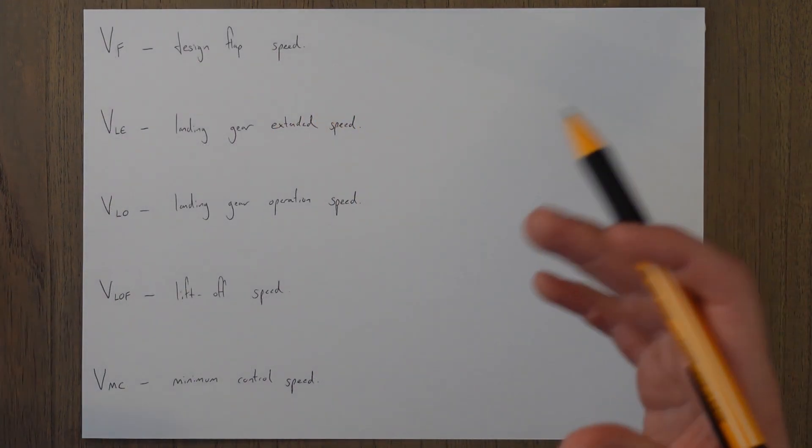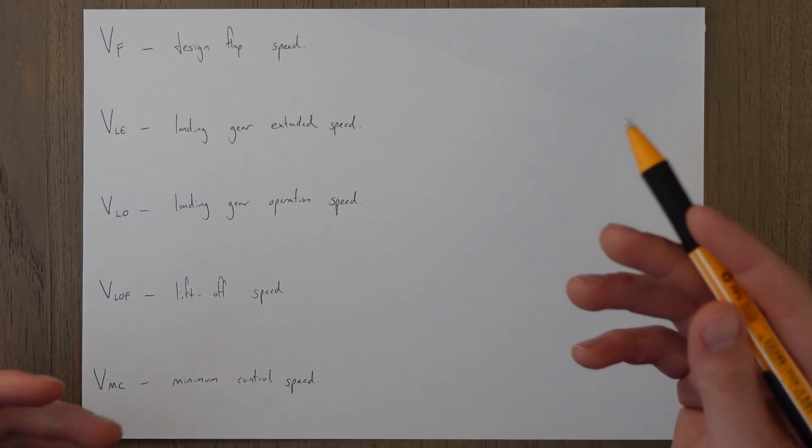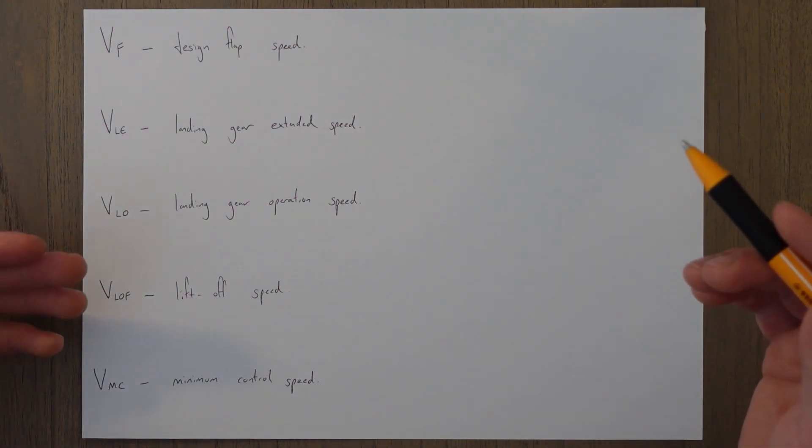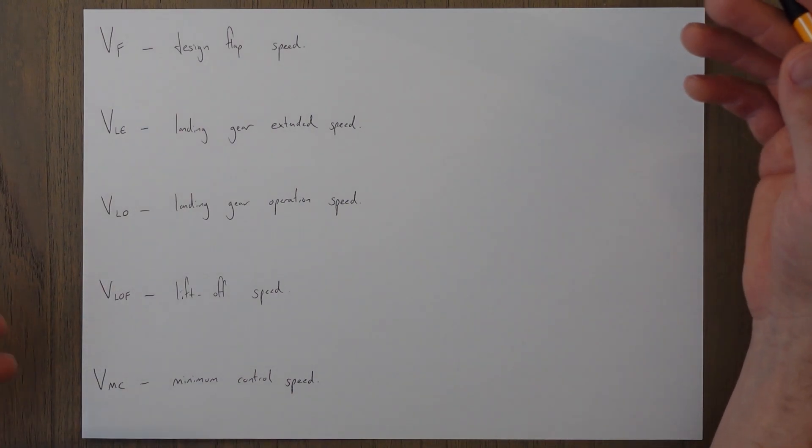VF is the design flap speed and I debated whether or not to put this one in as you never normally hear of it as VF but more commonly it's referred to as a flap limiting speed. This is the maximum structural speed a certain flap setting can take. For example, on an A320 the maximum speed for flap 2 is 200 knots. We can't fly above that speed without potentially damaging the control surface. Normally this is shown on a little placard in the cockpit so you can double check the speeds before selecting the flap.